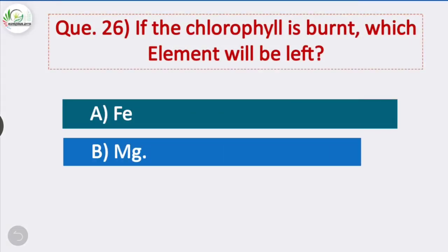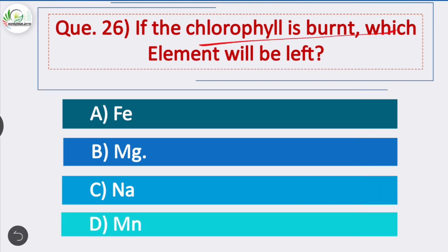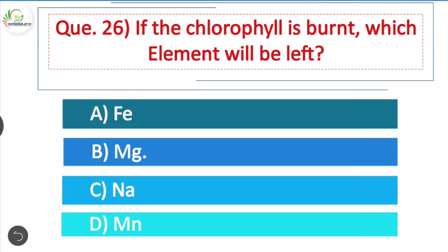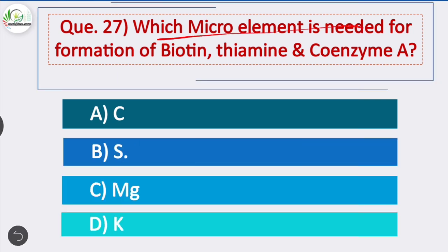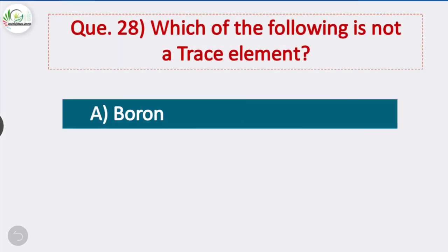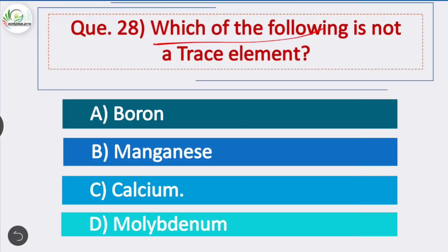Question 26: If the chlorophyll is burned, which element will be left? If chlorophyll is burned, magnesium will be left — option B is correct. Question 27: Which micro element is needed for formation of biotin, thiamine, and coenzyme A? Question 28: Which of the following is not a trace element? Calcium is not a trace element — it is a macronutrient. The other three — boron, manganese, and molybdenum — are trace elements.